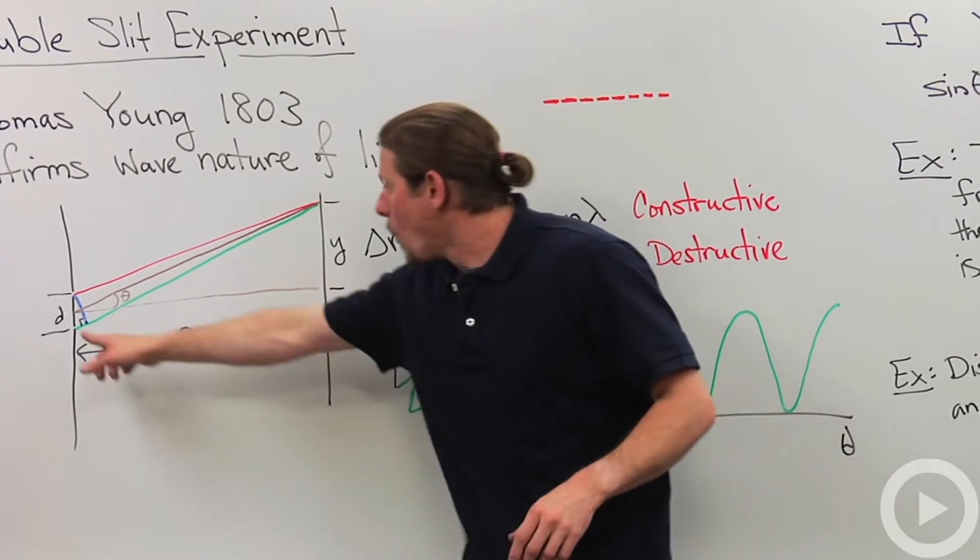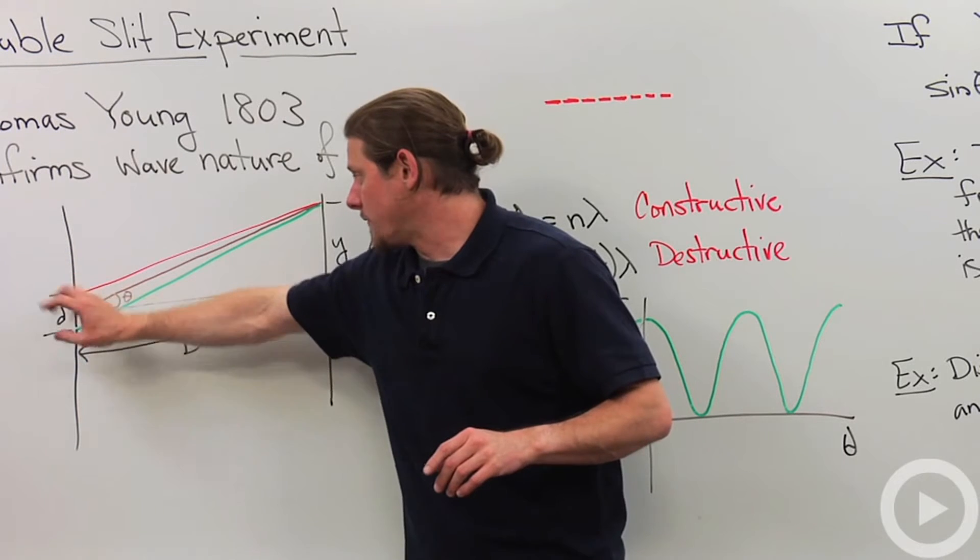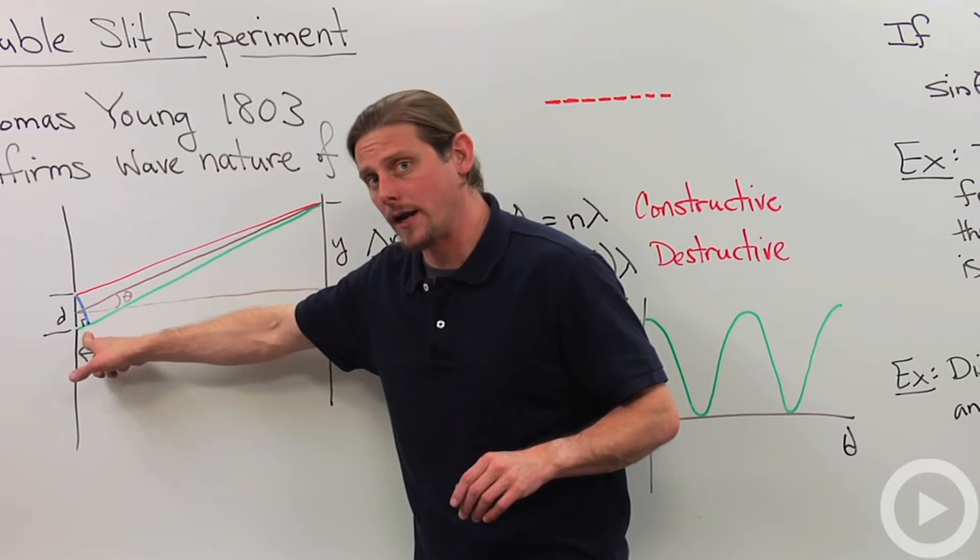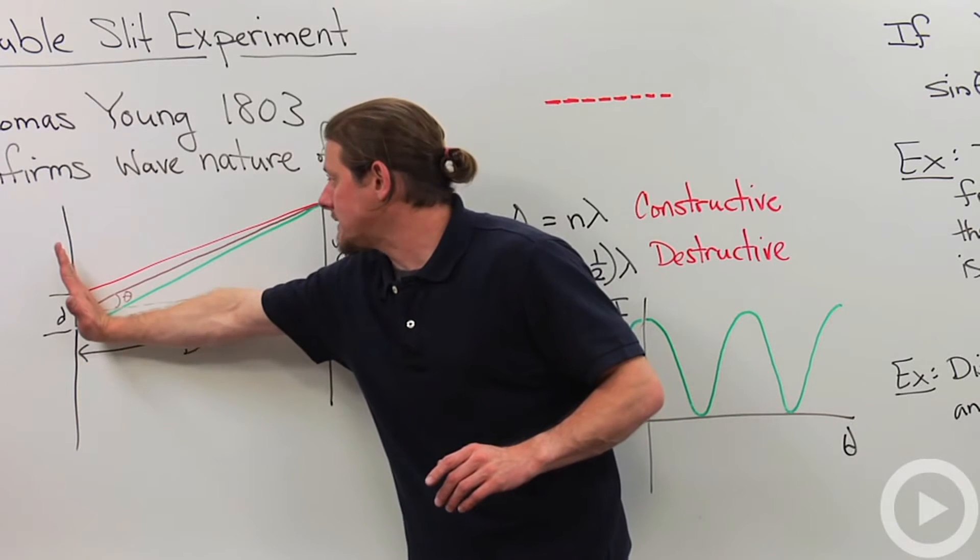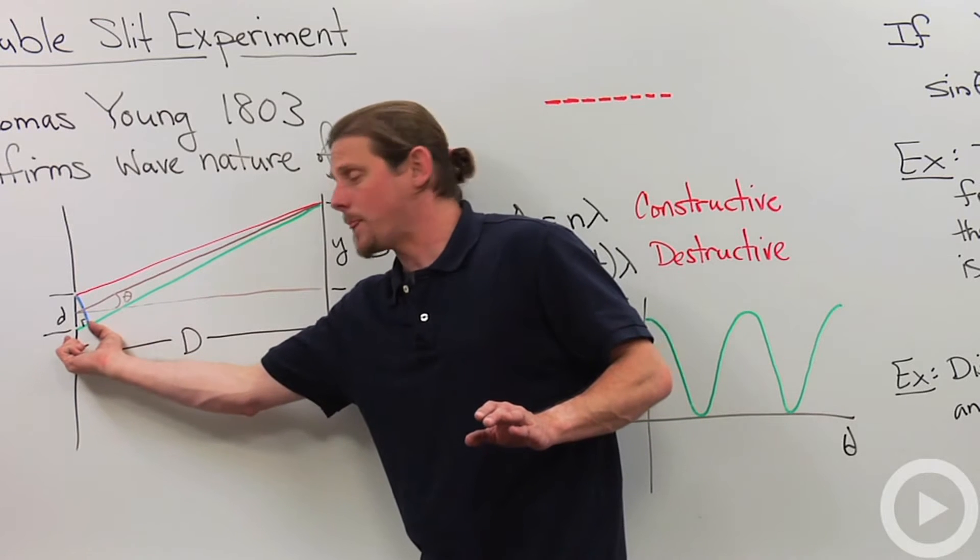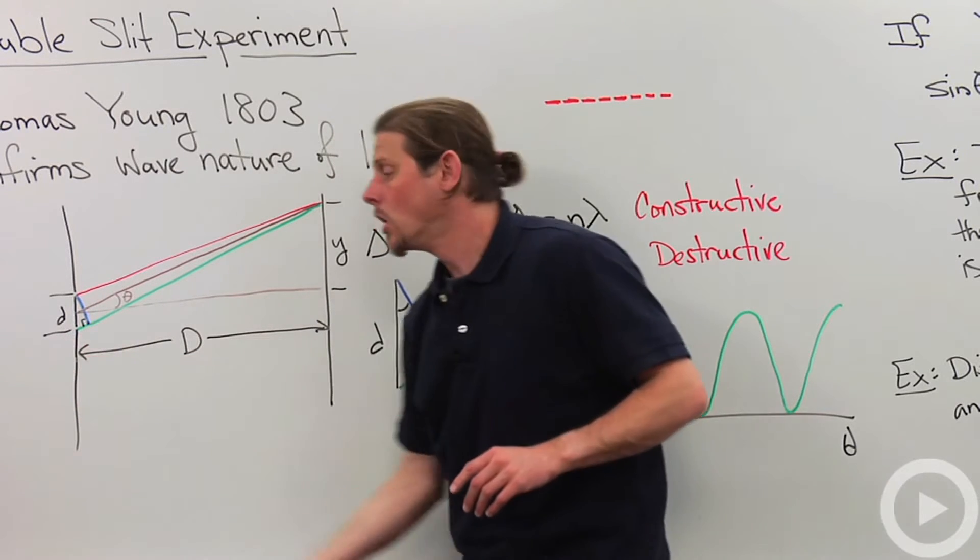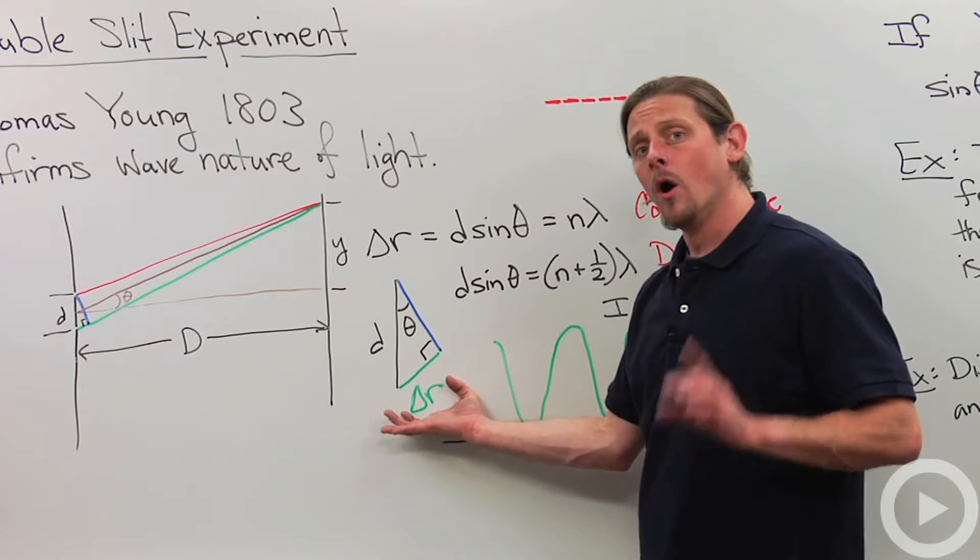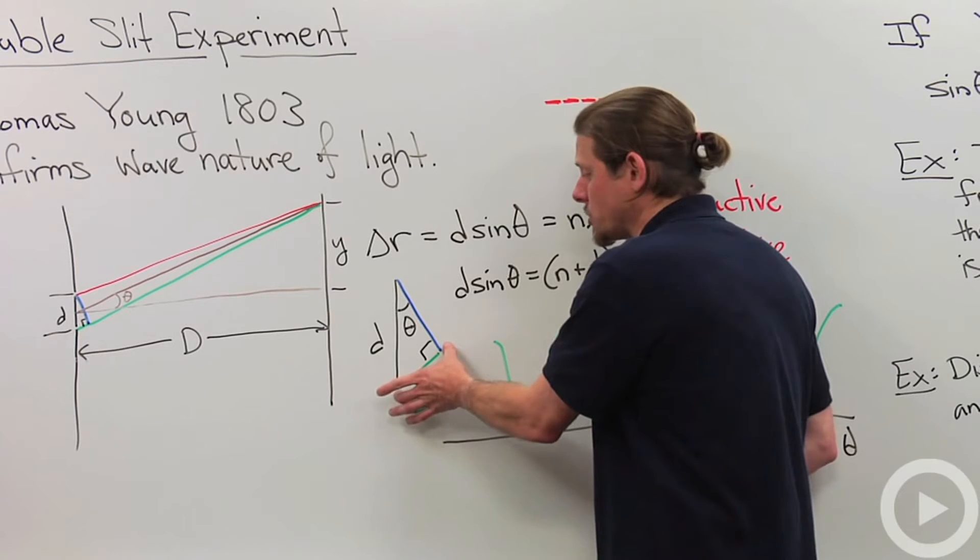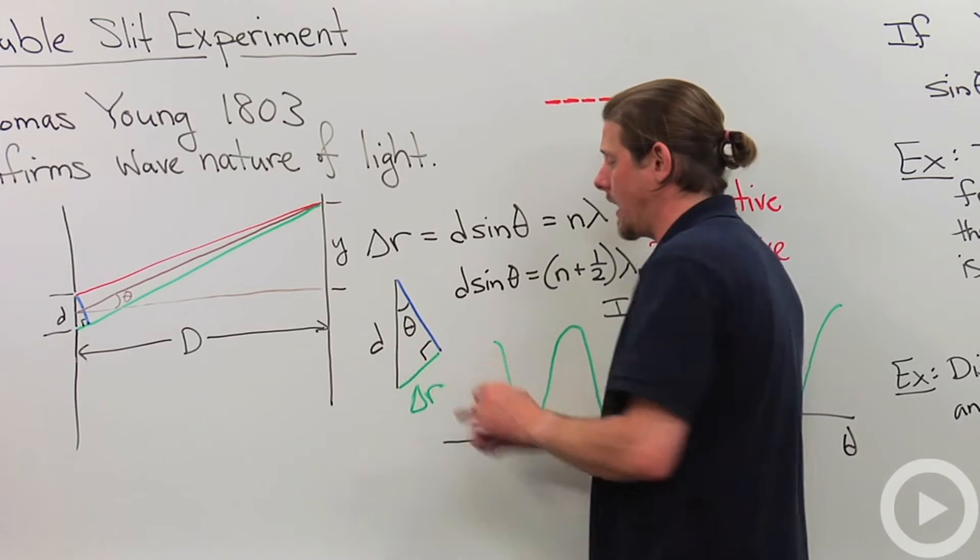Now, we can determine this approximately, this difference in distance, by drawing the following triangle right here. So we draw that down and we say the red and the green line are about the same distance and then we've got this little bit of excess from the bottom slit. So if we blow up this triangle, what we see is that this delta r, this difference in distance, is just equal to d times the sine of theta.